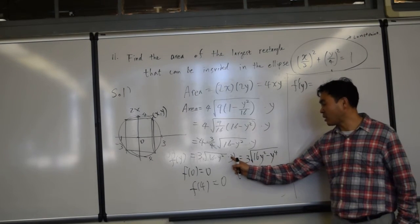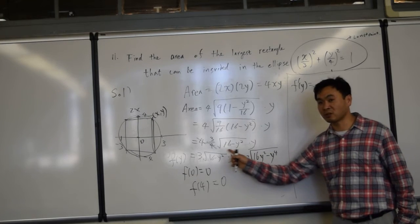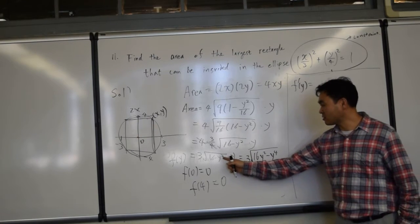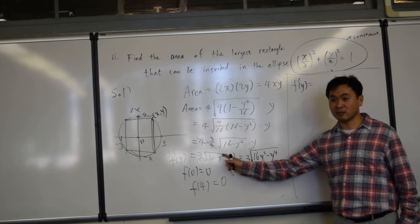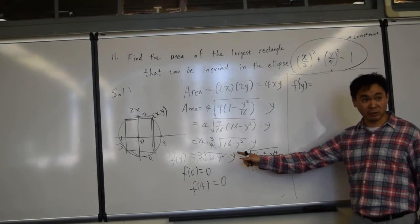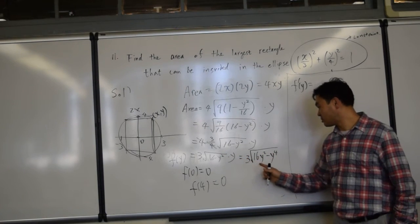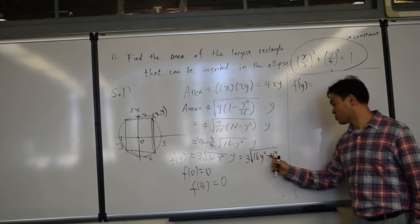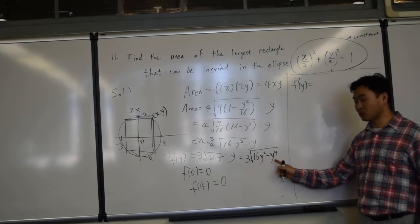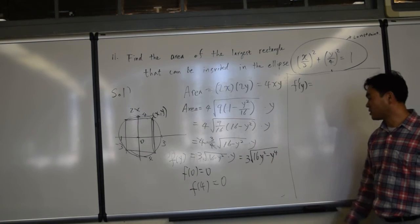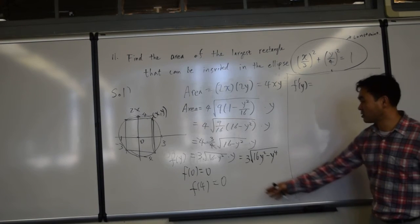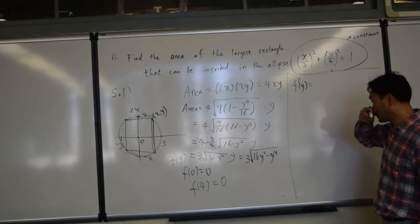See, if I leave this outside, then I need to use the product rule. But if I bring this inside, what happens if y goes inside? It becomes y squared, right? So when you bring it inside, that gets multiplied to each individual one. So you get 16y squared minus y to the fourth. And that's much easier to differentiate than this one. So let's try to do this one.